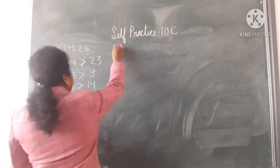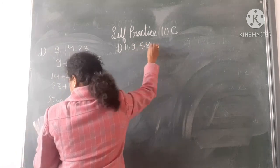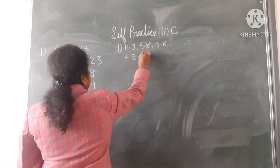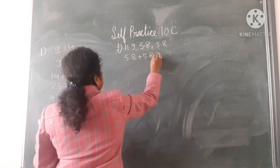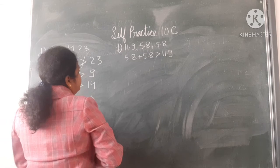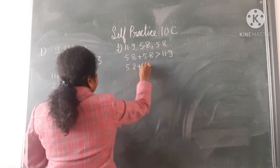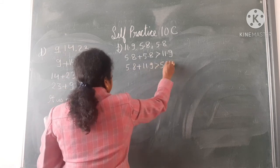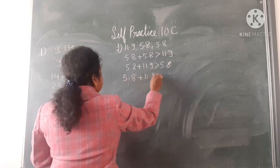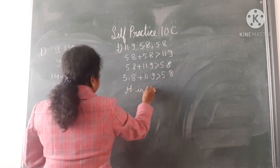Now see the F part: 11.9, 5.8, and 5.8. So 5.8 plus 5.8, and 5.8 plus 11.9. So it is a triangle.